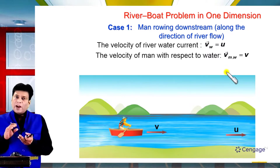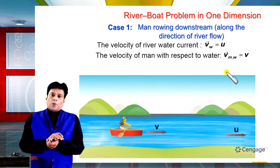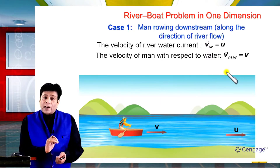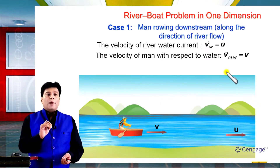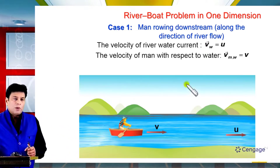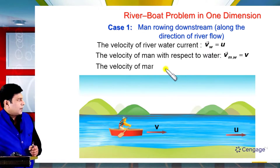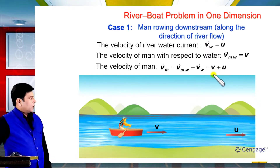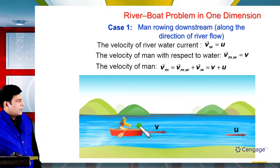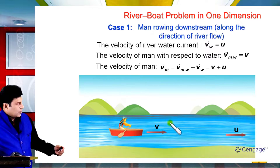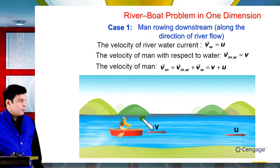Now we can write a vector equation. Suppose we want to find the velocity of the man with respect to ground. The vector equation will be: velocity of the man equals velocity of the man with respect to water plus velocity of the water. So this equals V plus U. That means if the man is rowing in the downstream direction, the velocity of the boat with respect to ground equals V plus U.